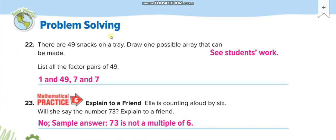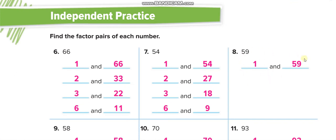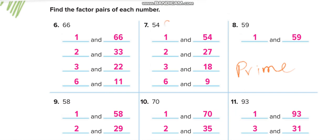The factor pairs of 49 are 1 and 49, and 7 and 7. Now an important point: any number that has only one factor pair is known as a prime number. Any number that has more than one factor pair is called a composite number. So 59 is a prime number, and 54 is a composite number — keep this in mind, it's very important.